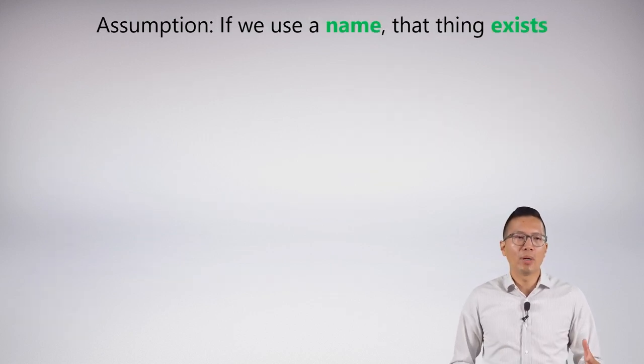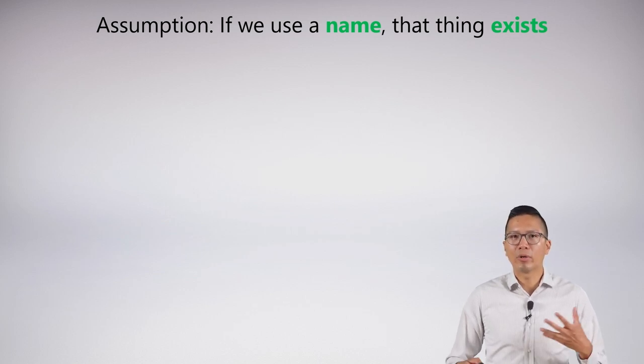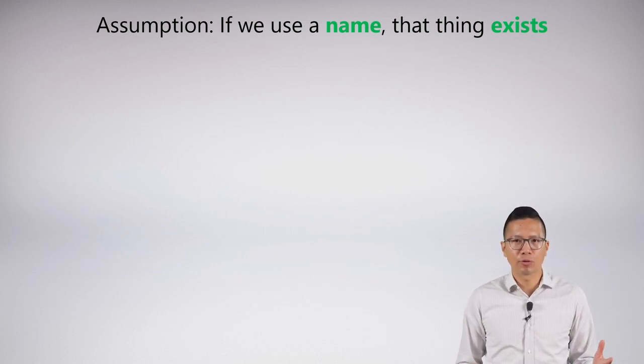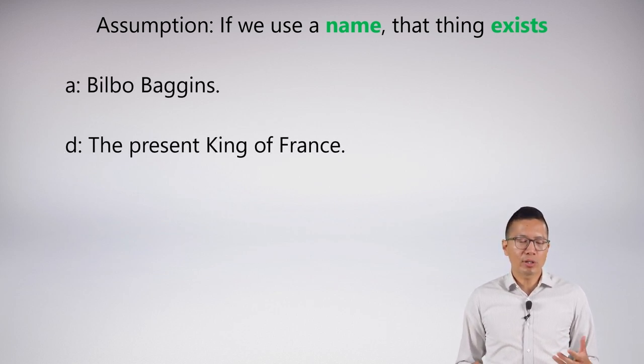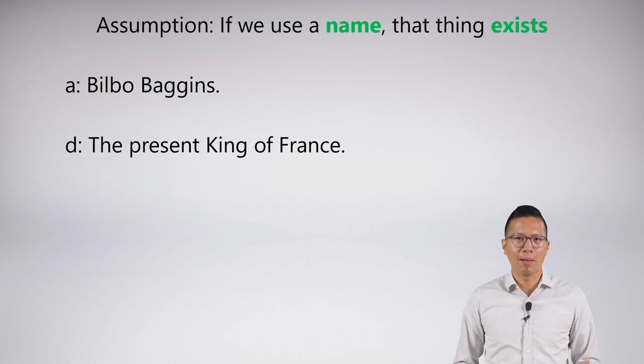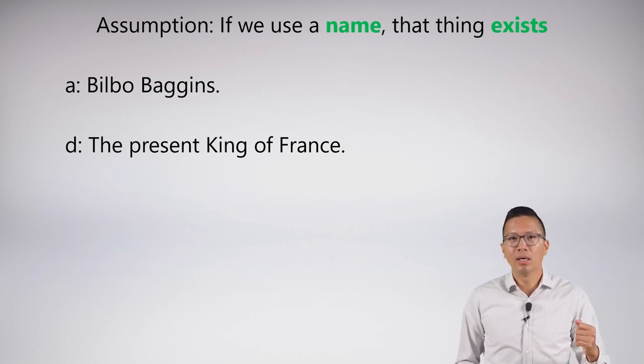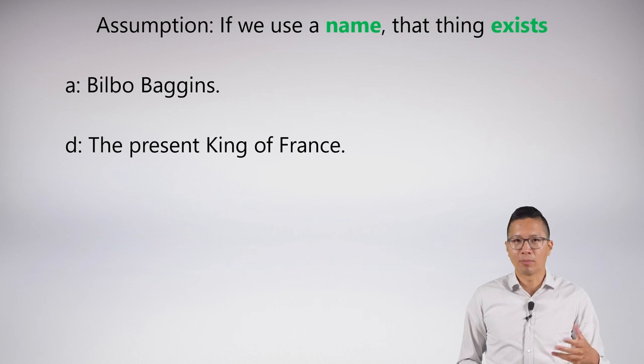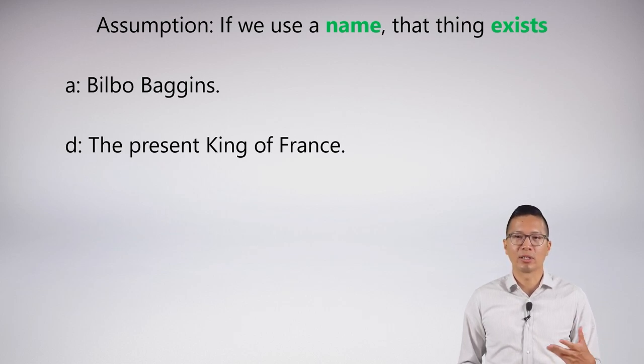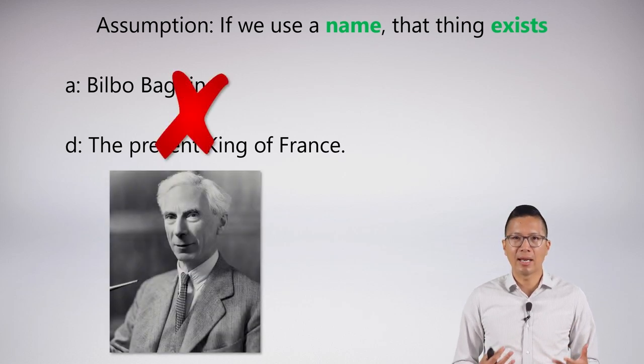We're going to assume a couple important things when we invoke a name. None of this is too controversial, and they have this history in logic, which I'll briefly mention. The first thing I'm going to assume is that if we use a name, it must be the case that that thing that we name really exists. Here are examples of names that I'm using: A is representing Bilbo Baggins and D is the present king of France. We're going to say that these are bad examples. We can't actually name these things because these things don't exist.